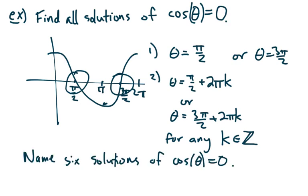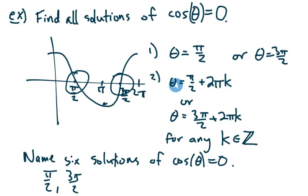Now say that I want you to name six specific solutions of this equation. We already know two of them: pi/2 and 3π/2. We just need to name four more. What does this k stuff mean? It means that if I pick any integer k and plug it into this equation, I get another solution. If k equals zero, then this is 2π times zero — that's just zero — and you end up with pi/2 plus zero. We already got that one.